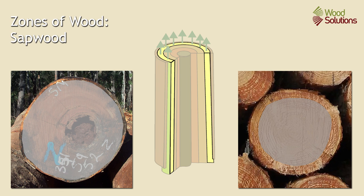The sapwood is the most recently formed wood on the outside of the stem. Made up of living and open cells, the sapwood's role is to transport water and nutrients from the roots and the leaves. As these cells contain starches but lack the protection provided by extractives, sapwood is often attractive to insects and fungi and is always classed as low durability when it is included in wood products.